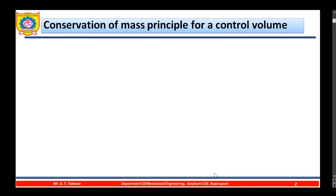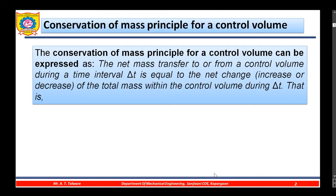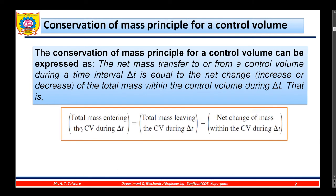Conservation of mass principle for a control volume: the net mass transfer to or from a control volume during a time interval delta T is equal to the net change — either increase or decrease — of the total mass within the control volume during delta T. That is, total mass entering minus total mass leaving the control volume during delta T equals the net change of mass within the control volume during delta T.